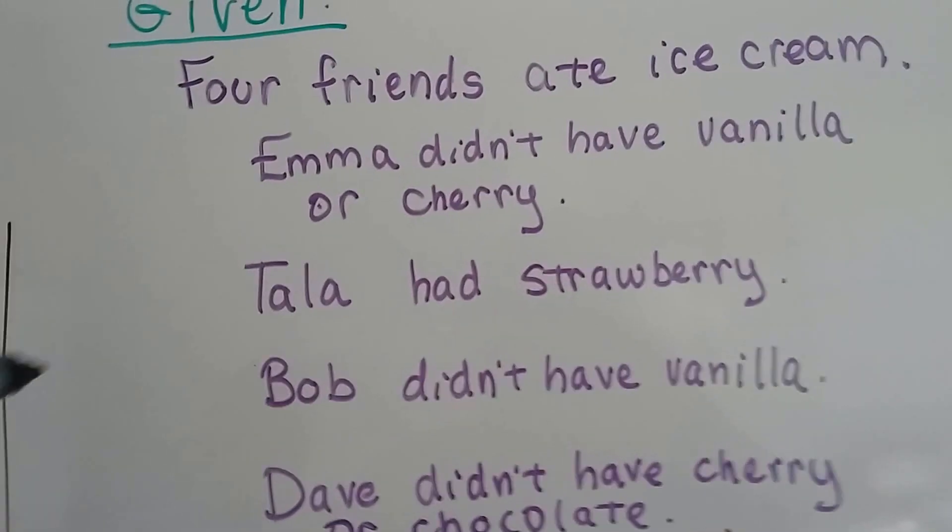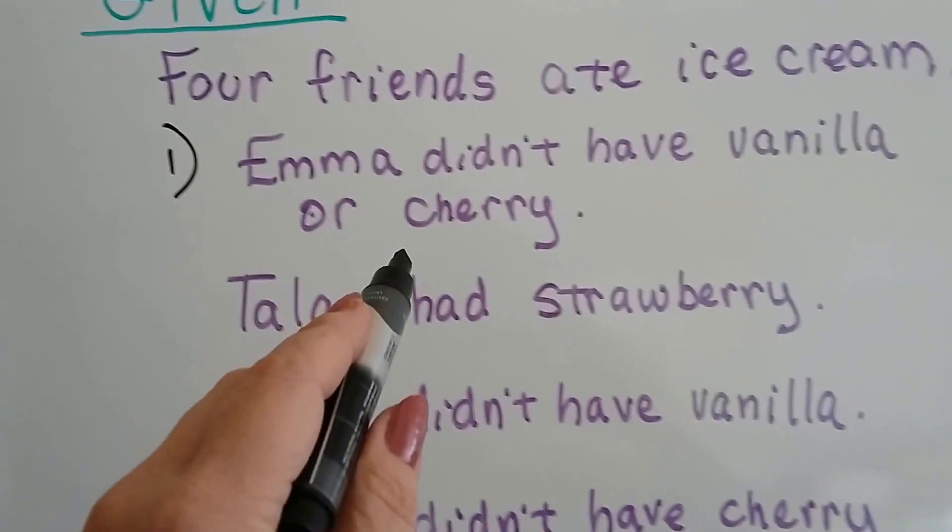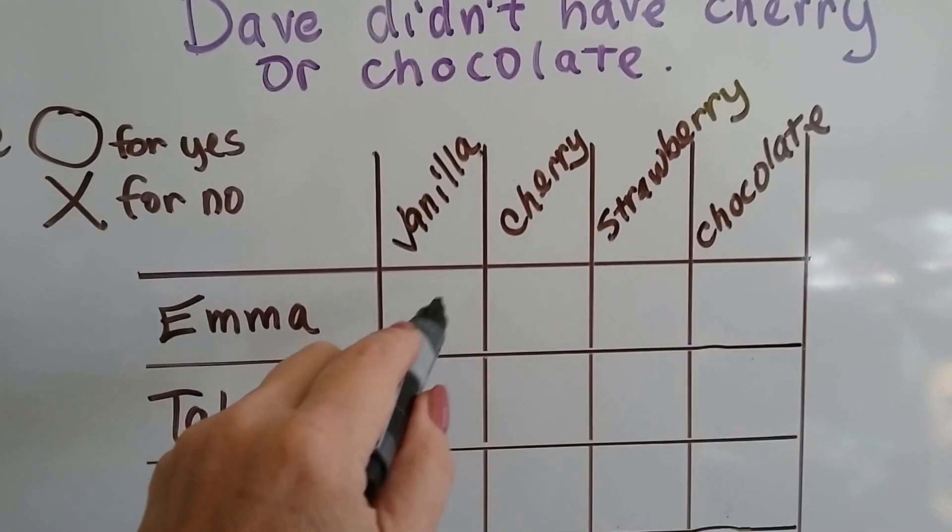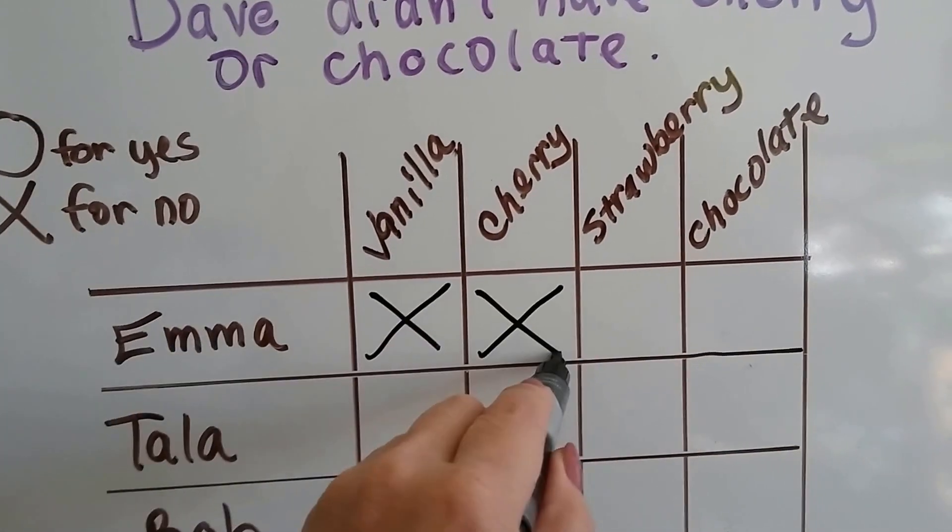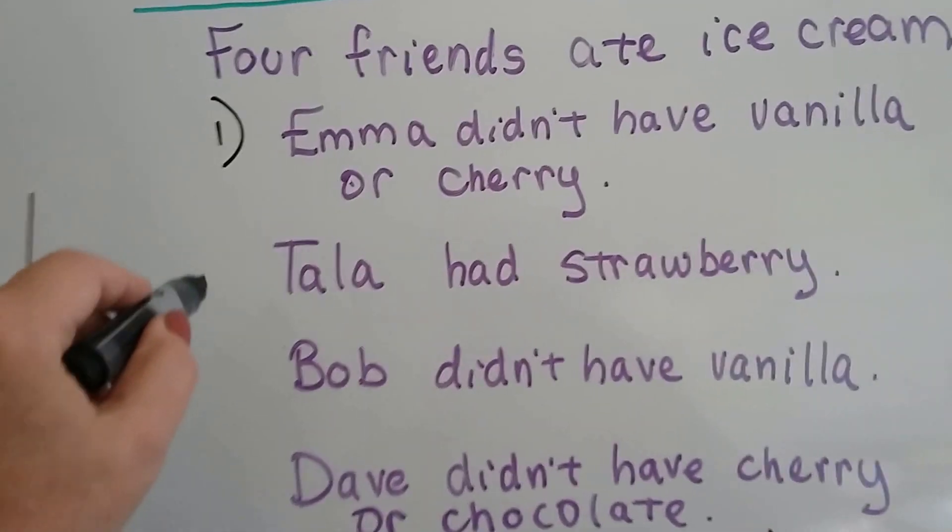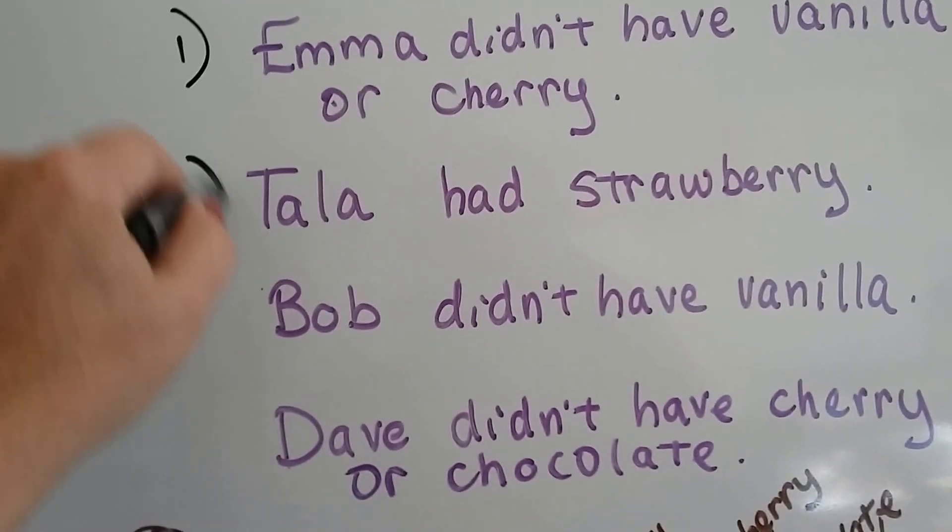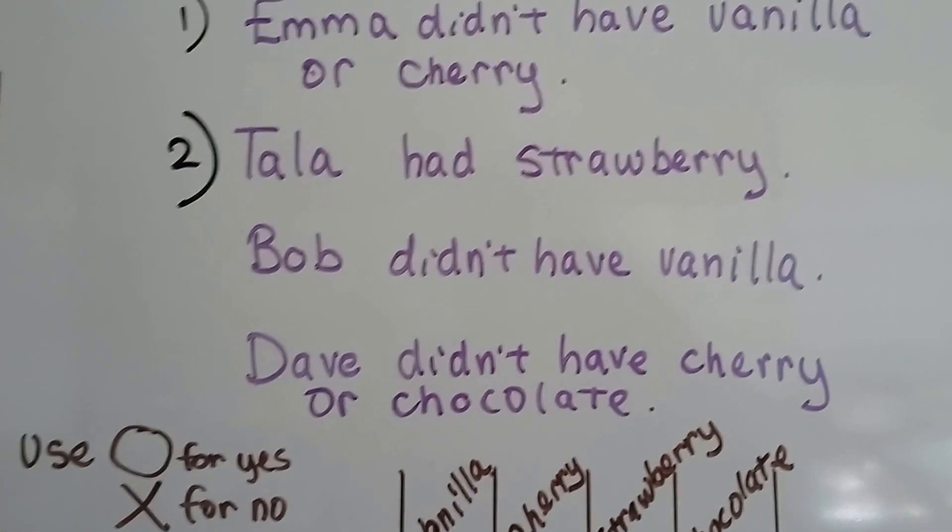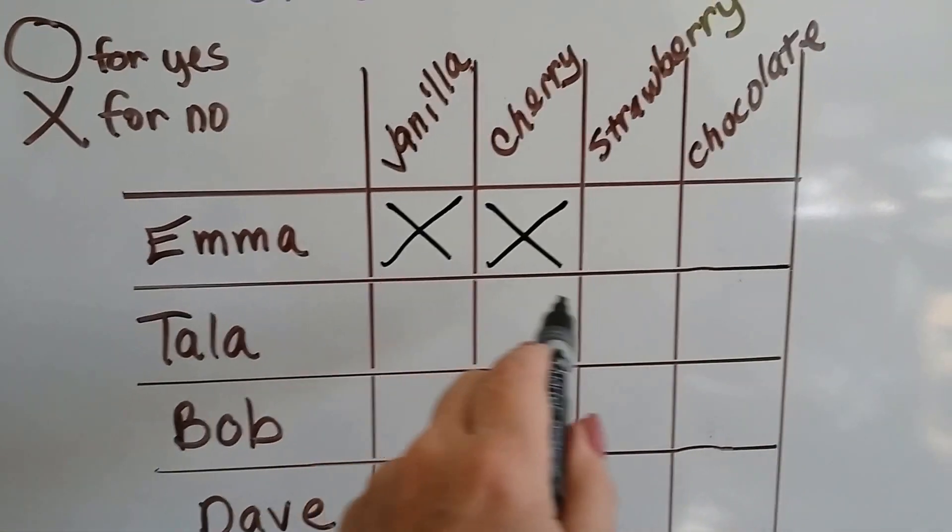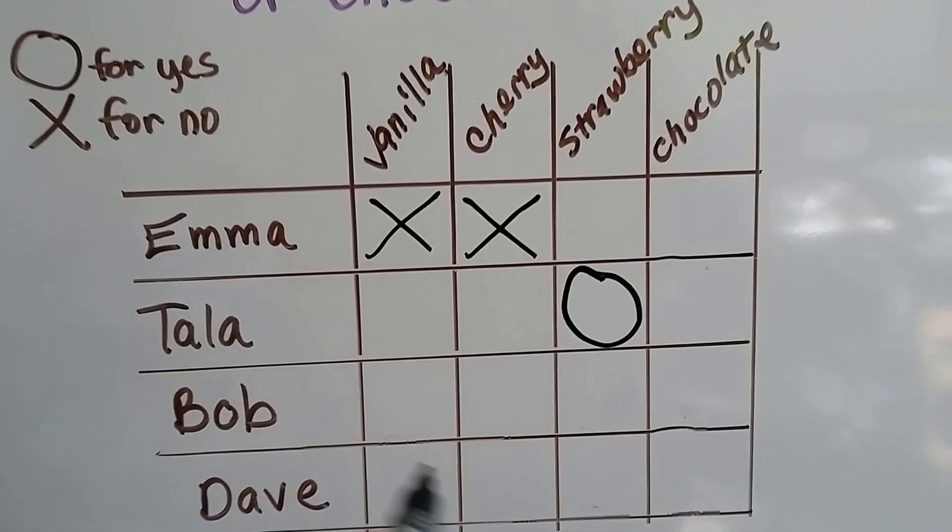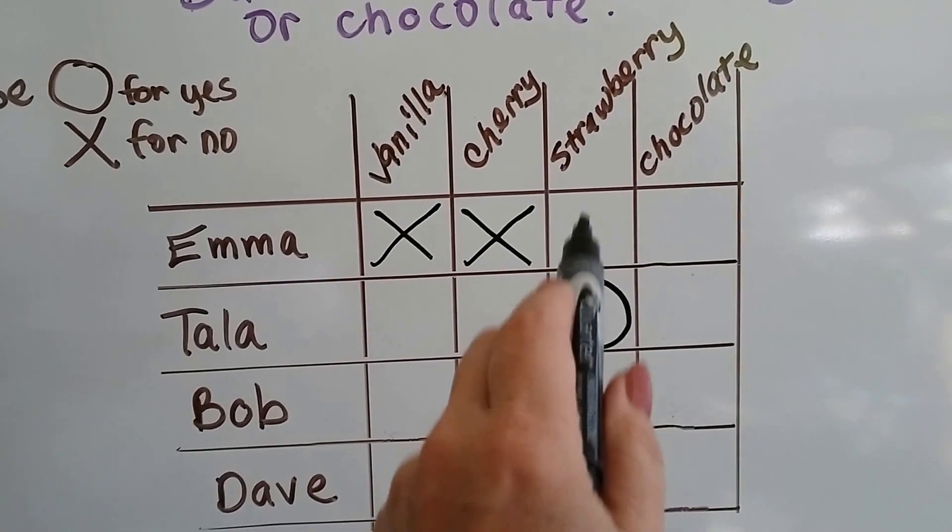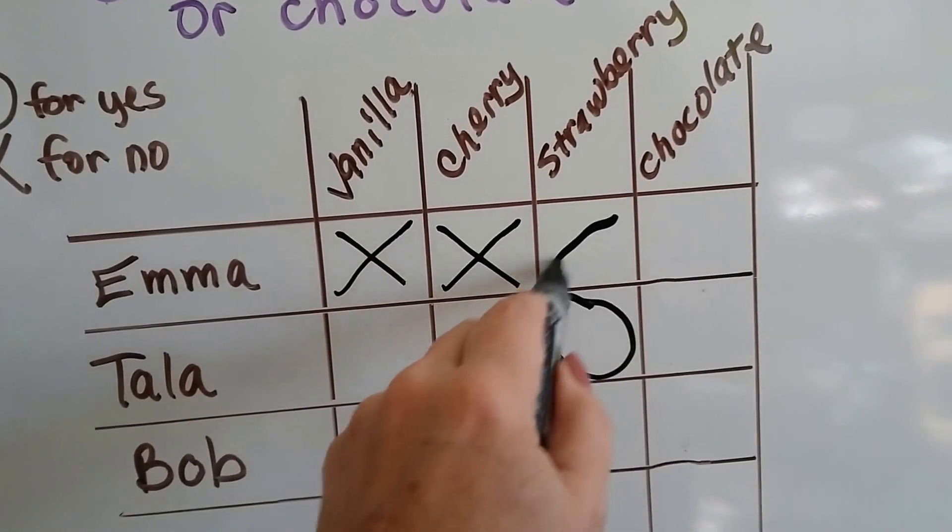The first clue says Emma didn't have vanilla or cherry. So what we do is we look at Emma and we put an X for vanilla and cherry because she didn't have those. So we're crossing them off the table. Our next clue is that Tala had strawberry. Well they're giving that to us, aren't they? So we know Tala had strawberry. So we go to Tala and we go over to strawberry and we put a nice big fat O. Now if Tala had strawberry, then Emma didn't have strawberry because they each had a different flavor.